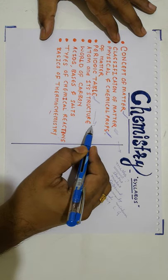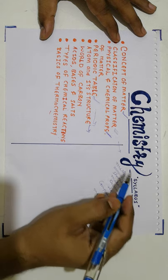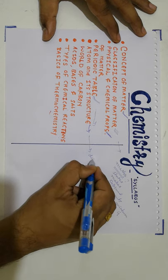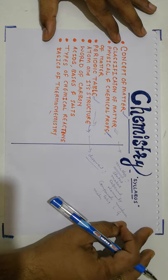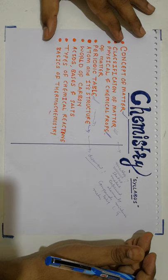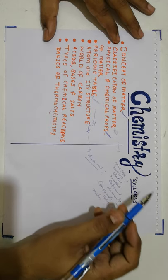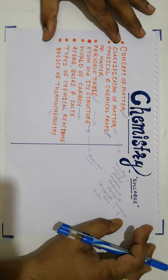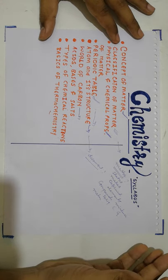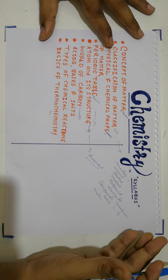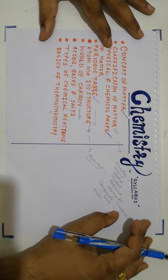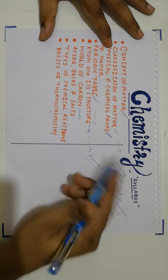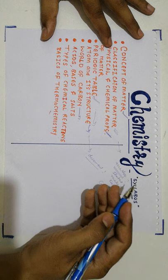After that, we will focus upon atom and its structure — another basic chapter. Here we will talk about the discovery of atom, how it was discovered, and who discovered it. After that, we will talk about the world of carbon. Carbon is an extremely important element present almost everywhere — that is why the name 'world of carbon.' Here we will talk about alkanes, alkenes, and alkynes, which are different forms of carbon. In simple terms, we are going to talk about hydrocarbons.